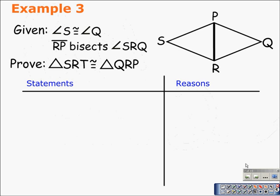Example three. We'll get started by writing out our given as we mark it. We're given that angle S is congruent to angle Q — this angle here congruent to this angle here. We're also told that RP bisects...